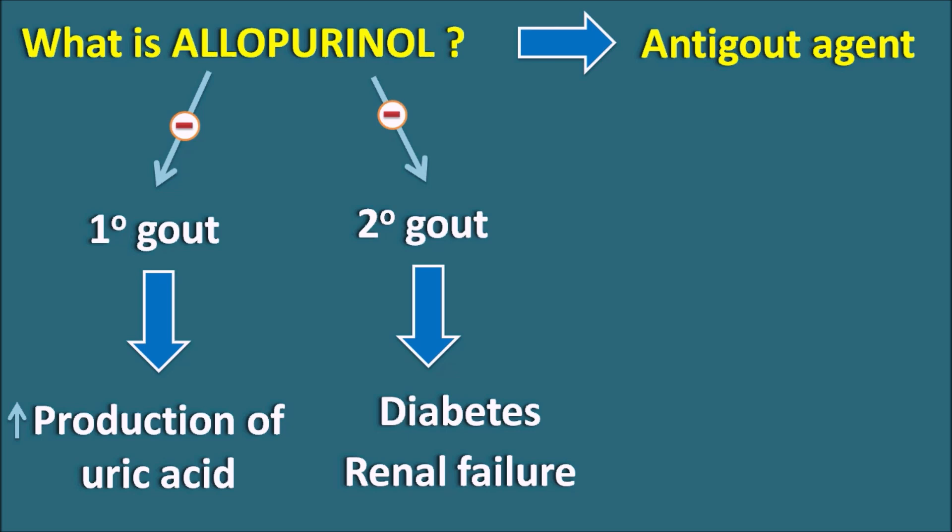Interestingly, allopurinol is not used for the acute treatment of gout. It is used as a prophylactic, because this drug inhibits the synthesis of uric acid, which takes some reasonable time to control uric acid levels back to normal. This drug does not increase the excretion of uric acid; rather, it inhibits the synthesis of uric acid.